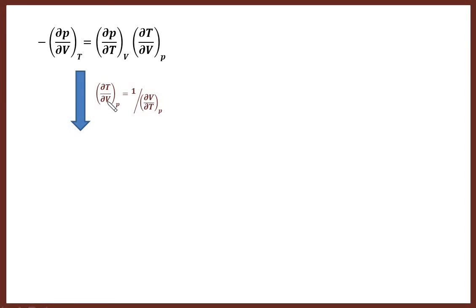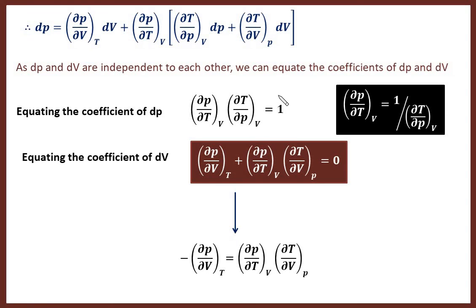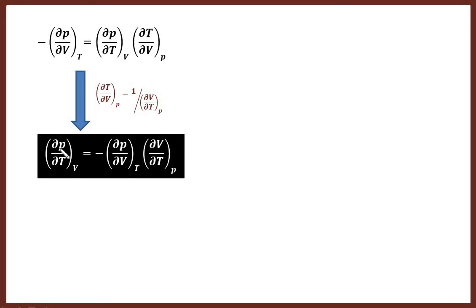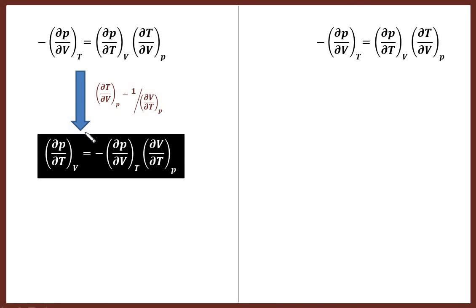We utilize the relation (∂T/∂V)_p equals 1 divided by (∂V/∂T)_p, which we just proved by equating the coefficient of dP. This is valid for any variables — here we use it for T and V. Substituting, we get (∂P/∂T)_v equals minus (∂P/∂V)_T times (∂V/∂T)_p. Note down this relation as expression 1.